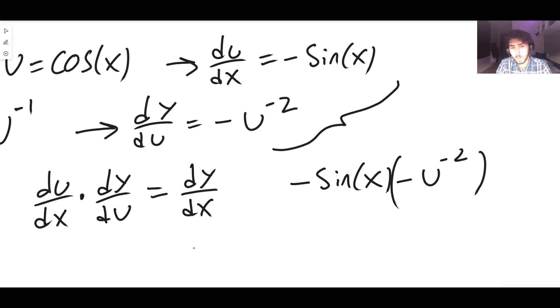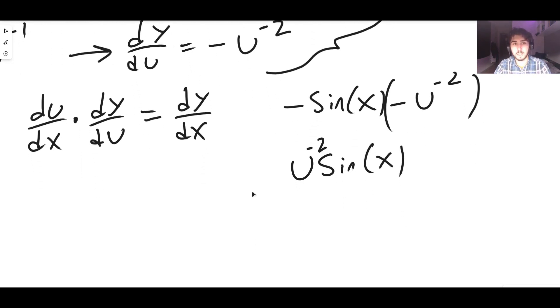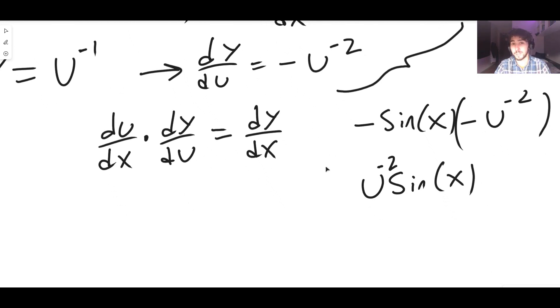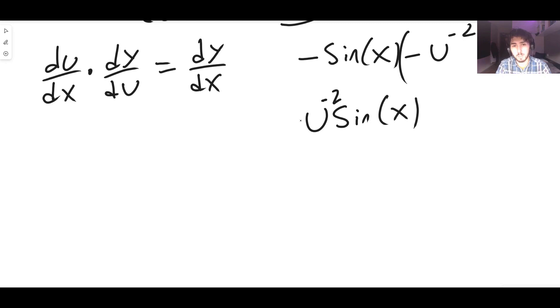The minuses cancel out we end up with u to the minus two sine x and of course we can't leave the answer like this because we need to rewrite u in terms of x. So well u in terms of x is just cos x. So this becomes just cos x to the minus two multiplied by sin x and that's dy/dx.